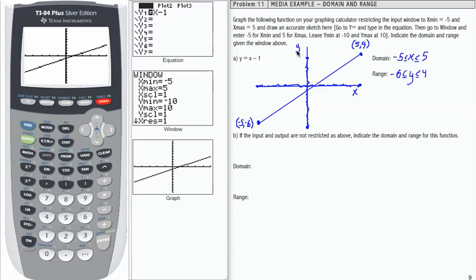Now in part b, the question is if the input and output are not restricted as above, indicate the domain and range. So in the first part, when we limited the values for input here and output, then we created an artificial boundary on this function. If instead I'm allowed to use any value of x for which the function takes on inputs and outputs, then my domain would be all real numbers and my range would be all real numbers.